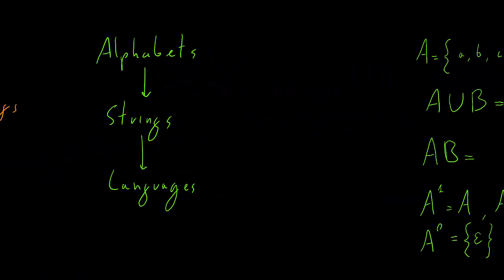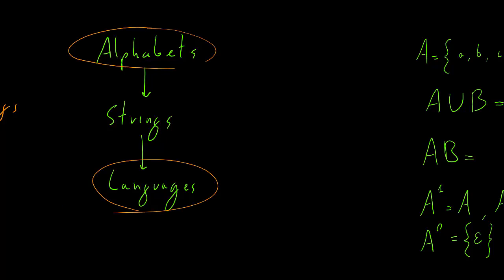The kinds of sets we will be dealing with in the course will mainly be alphabets and languages. What's an alphabet? An alphabet is a set containing symbols — it's really easy, nothing more than that, just a collection of symbols. Strings are not really sets, but strings are sequences of symbols. Each string is defined on an alphabet.